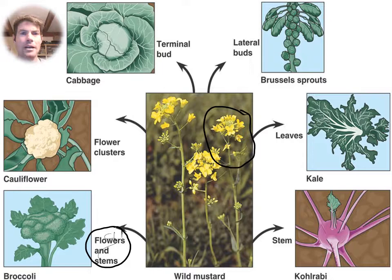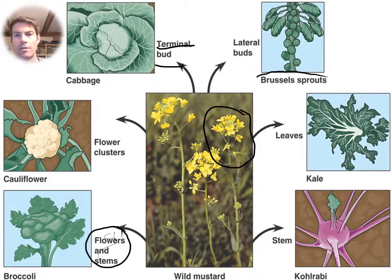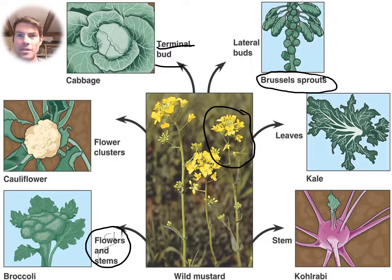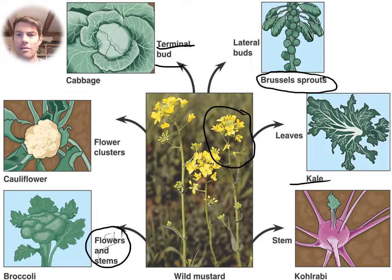And we got cauliflower, focusing on the clusters. Cauliflower you do have to tie it up a certain way. Very similar to cauliflower is cabbage, where you're looking at what's called the terminal bud. And then probably one of my least favorites out of all these - Brussels sprouts - you got little buds coming off the stem. And kohlrabi.